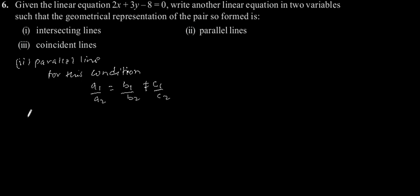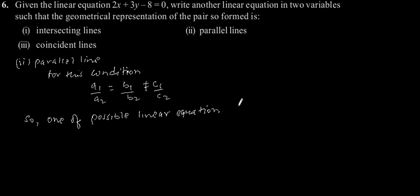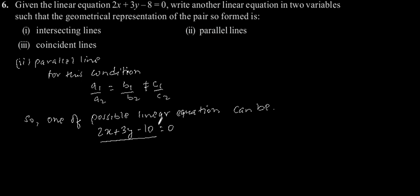So one of the possible linear equations can be 2x plus 3y minus 10 is equal to 0. Let's check it, considering this as the first equation and this as our second equation.